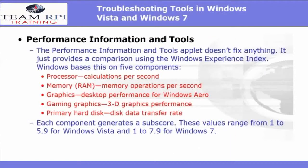When you select performance information and tools, it really doesn't fix anything — it just provides a comparison using the Windows Experience Index. Windows bases this on five components: your processor, the amount of RAM, your graphics and gaming graphics, and your primary hard disk space. Each component generates a sub-score. These values range from 1 to 5.9 for Windows Vista, and 1 to 7.9 for Windows 7.